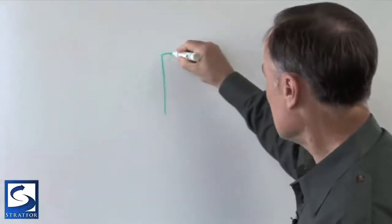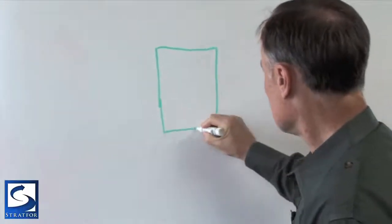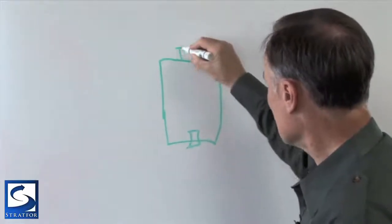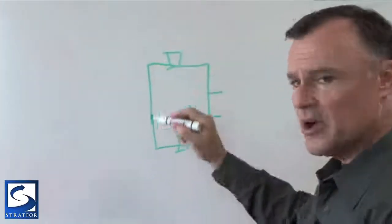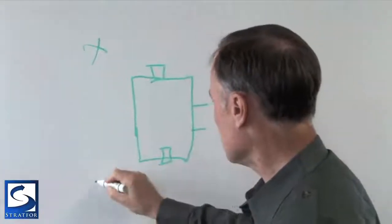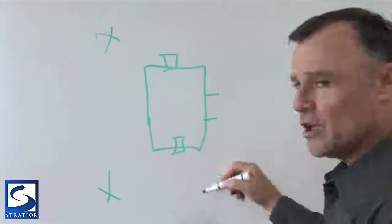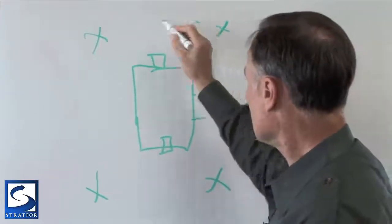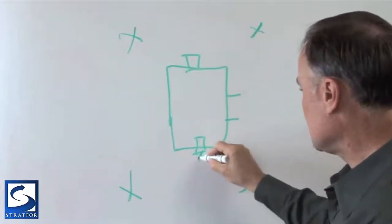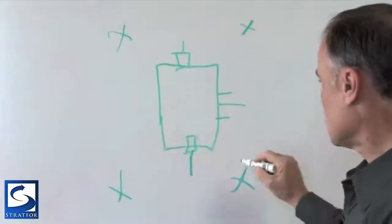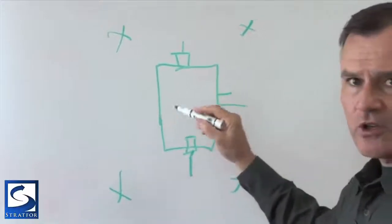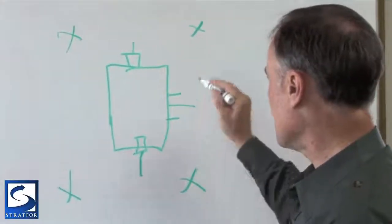I want to show you the complexity of what it takes to deploy a team around a typical townhouse. If you take this as your house, with a front door here, a back door, and perhaps a garage, there are a couple different formations you're going to deploy. One is called a box, where you're going to put surveillance assets — FBI agents, surveillance teams — to cover all contingencies in case the suspect leaves via the front door, a car, or the back door. This is called a box formation. It's very simplistic and one of the basics, but as you can see it usually takes at least four agents.